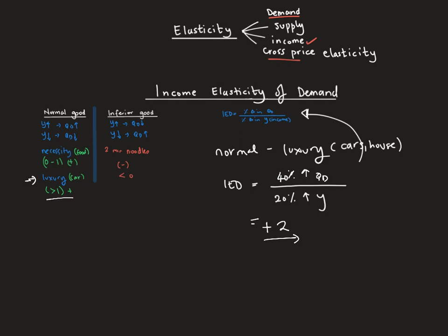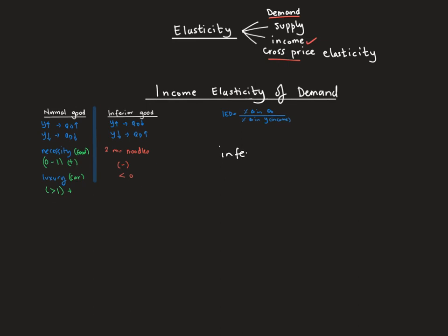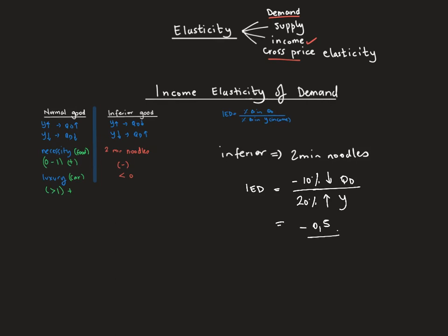In the last case, dealing with an inferior good — two-minute noodles for example — when income increases you consume less of it. If income increases by 20%, say you got a new job or a raise, the quantity demanded for the inferior good decreases by 10%. This gives an elasticity of negative 0.5 — a negative elasticity less than zero, as described in the introduction to the normal versus inferior good case.